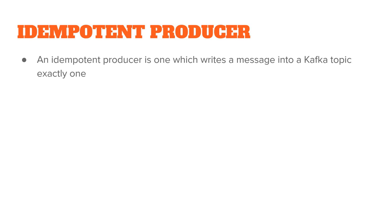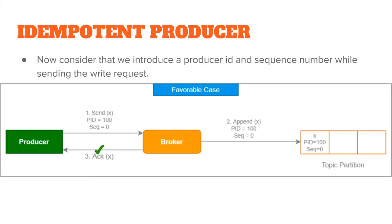An idempotent producer is exactly what solves this problem. An idempotent producer is a Kafka producer which writes a message into a Kafka topic exactly once. Let us see how it works.